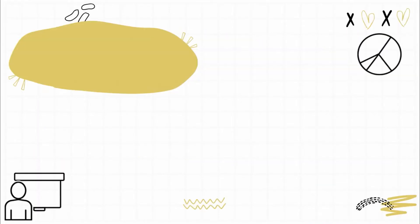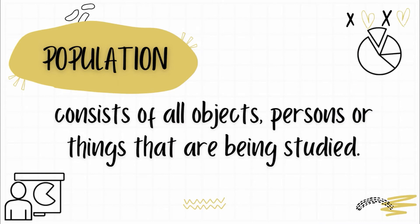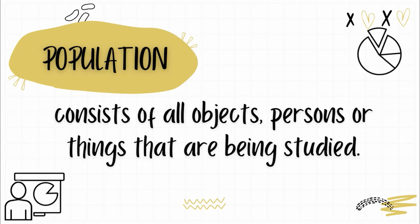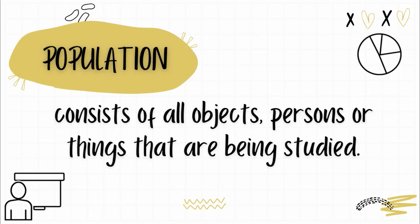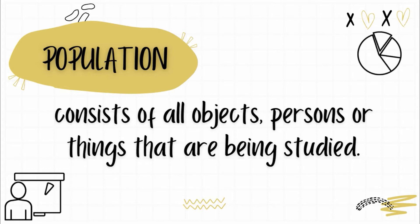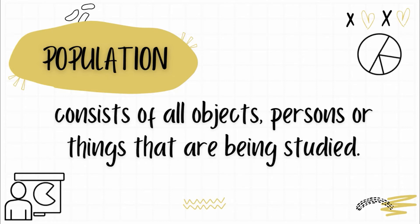The first one is what we call the population. Population consists of all objects, persons, or things that are being studied. When we say 'all,' it means everything that we want to study. You won't have any difficulty because I will be giving examples as we go on with our discussion.